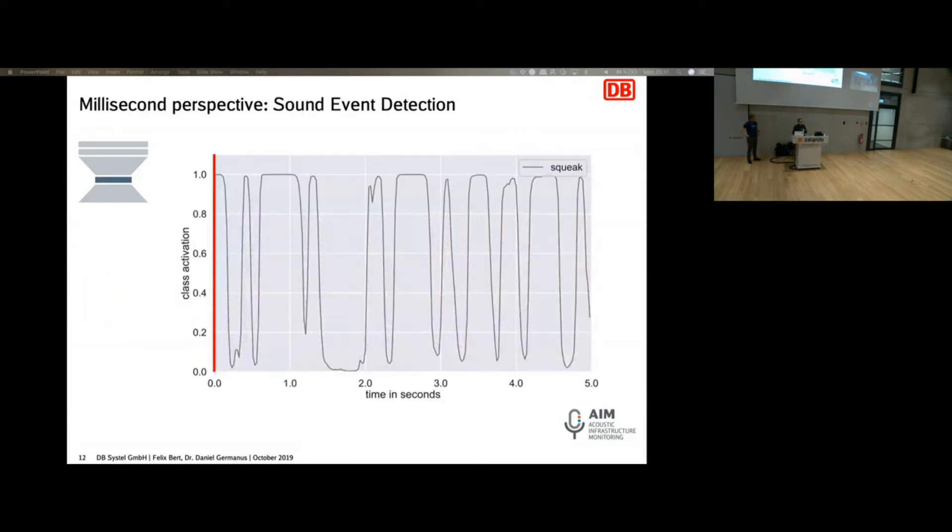What is the output of our network? The output of our network would basically for each class be an activation function over time. So the audio what I showed you earlier, it's actually supposed to show you squeaks. And this is like the confidence of the network in where it thinks there's squeak relevant.